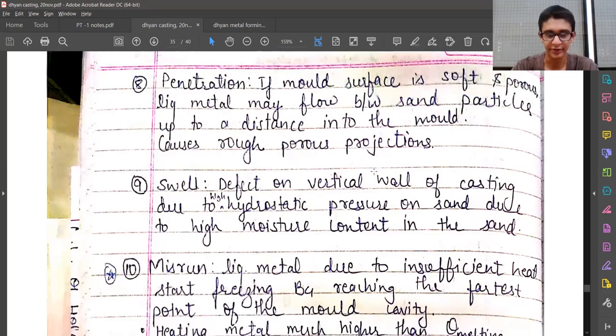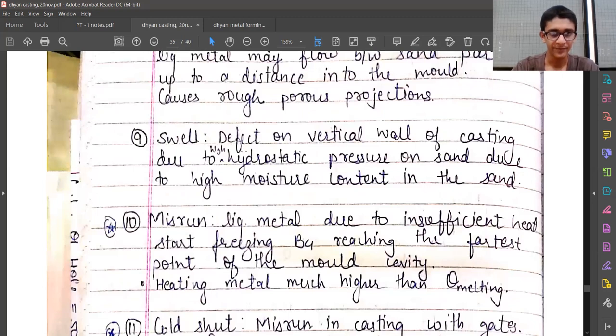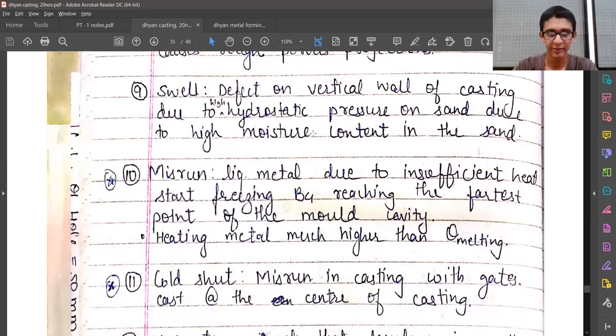Ninth is swell—a swelling surface defect on vertical walls of casting. There are four vertical walls on the casting, and this is due to high hydrostatic pressure on sand due to high moisture content in the sand. This is very simple—hydrostatic pressure because we are using green sand. There is some moisture content and because of that moisture content there would be some swelling.